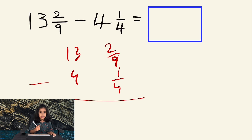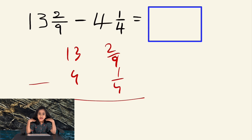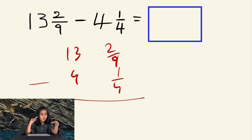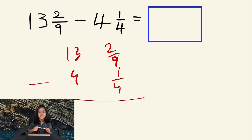So let me start with the bigger one, that's 9. Let me check the multiples of 9 that will also divide evenly by 4. What are the multiples of 9? 9 — is it divisible by 4? No. What about 18? No. What about 27? No. What about 36? Yes, it is! Great, we got the least common multiple of the denominators.